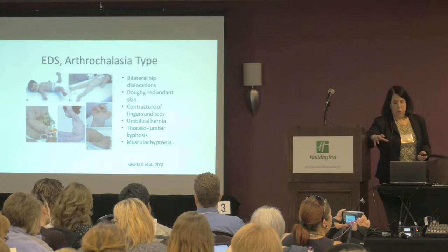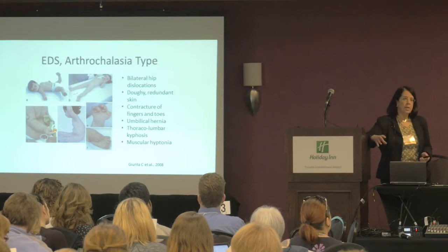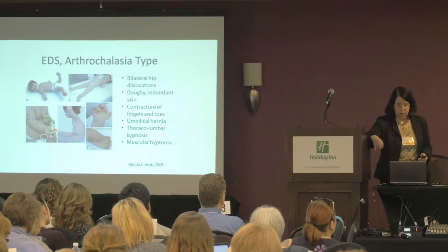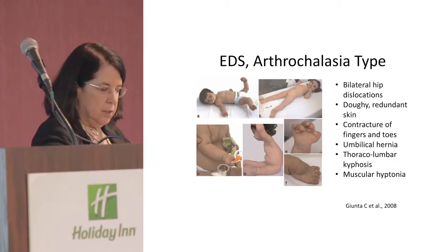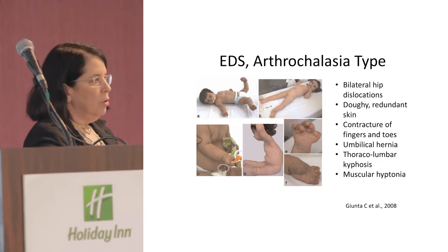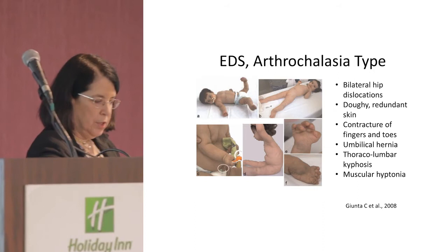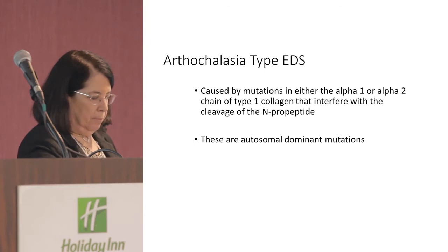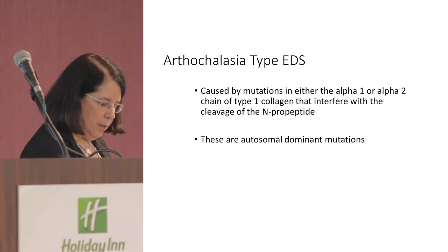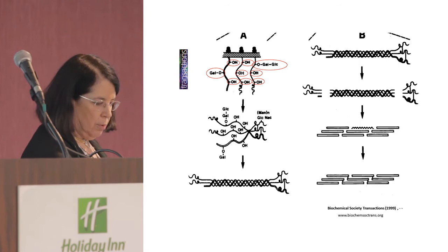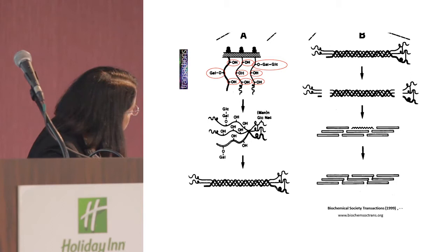The arthrocollasia type is one of the rarer forms. Patients present with bilateral hip dislocation, so when we see a baby with bilateral hip dislocation and an EDS phenotype, arthrocollasia must be considered. The skin is described as doughy and redundant; there are finger and toe contractures, umbilical hernias, kyphosis, and muscular hypotonia. This is caused by autosomal dominant mutations in the alpha-1 or alpha-2 chain of type 1 collagen that interfere with cleavage of the N-propeptide, preventing proper fibril assembly.